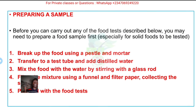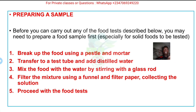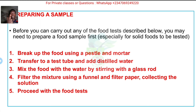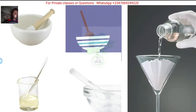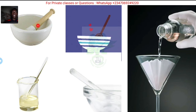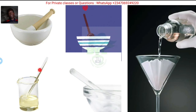For all tests you will need to break up the food molecules, as most of them will not be in soluble form. You have to break them down using a pestle and mortar, then transfer to a test tube and add distilled water. For example, if you are given a piece of bread to test for starch, you have to pound or blend it to make sure it is broken down, then mix the food with water by stirring with a glass rod. You add distilled water and stir it with the glass rod.